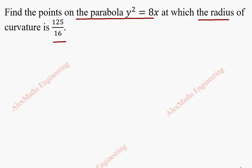We are going to find the expression for the radius of curvature and equate it to 125 by 16 to find the points. As a first part, we are going to differentiate this.